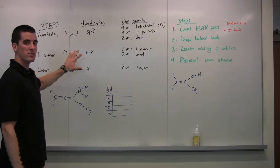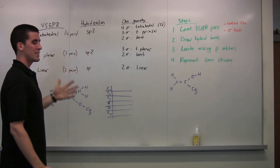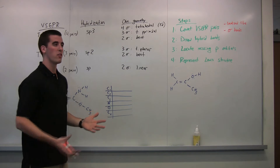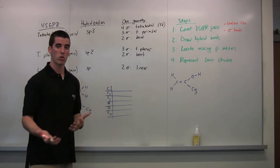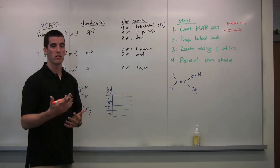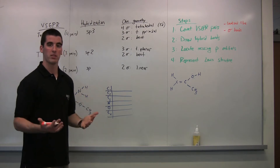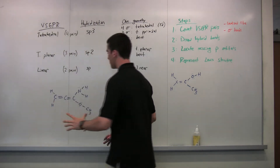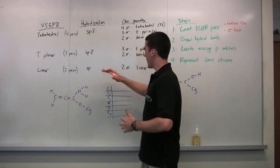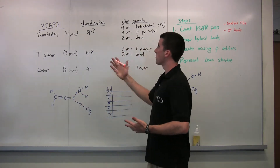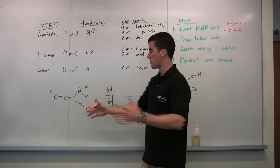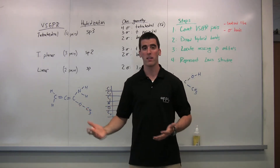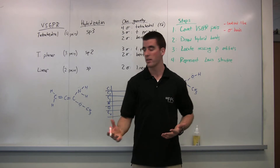To determine these, you use what we call VSEPR pairs. There are two types: sigma bonds or localized non-binding electrons. You use those to determine your hybridization and therefore your VSEPR geometry. I have an example molecule here with a table we'll use to write out the hybridization for each atom, and then we'll also find the VSEPR pairs and make the 3D orbital drawing.